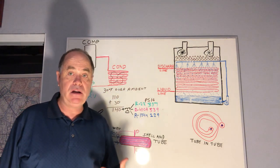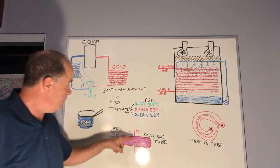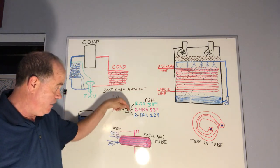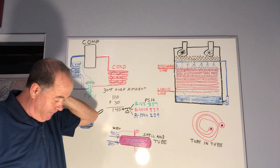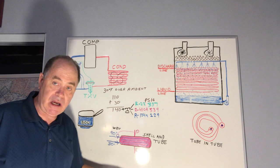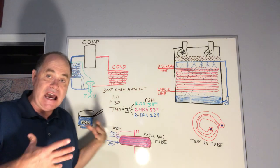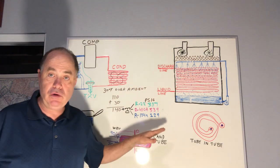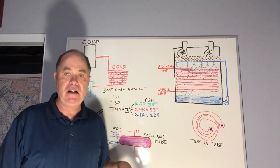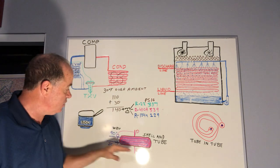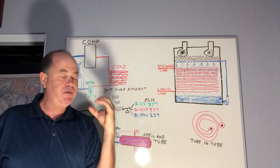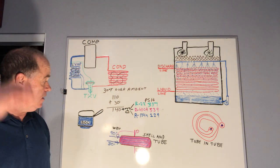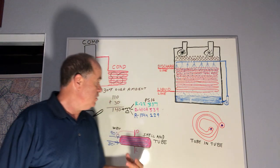To regulate head pressure in water-cooled systems, we use a water regulating valve tapped off the discharge line. As head pressure rises, it increases pressure on the water regulating valve, opening it more and letting more water flow through, which cools the condenser and drops the head pressure. If head pressure drops too much, the valve closes, reducing water flow so head pressure rises back up. The water regulating valve is constantly opening and closing just a little bit to maintain a steady head pressure — it's simple and effective.